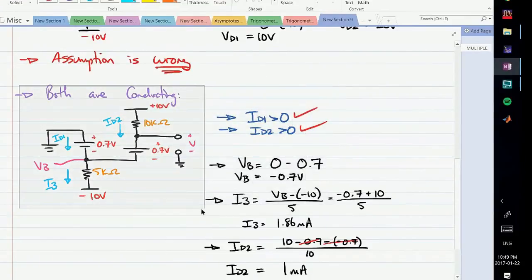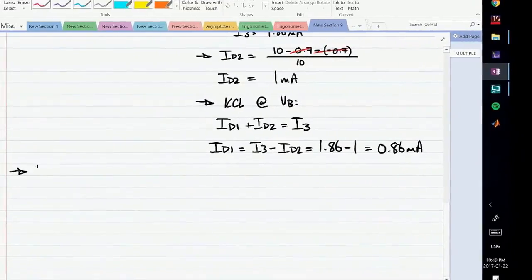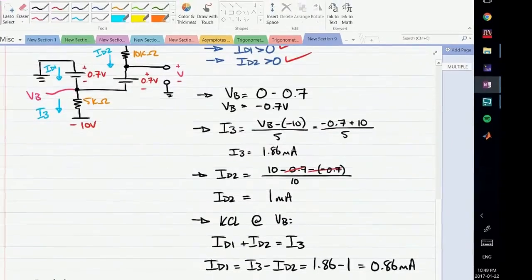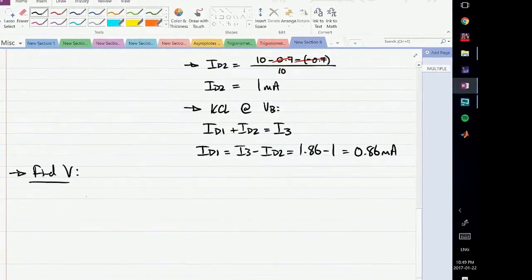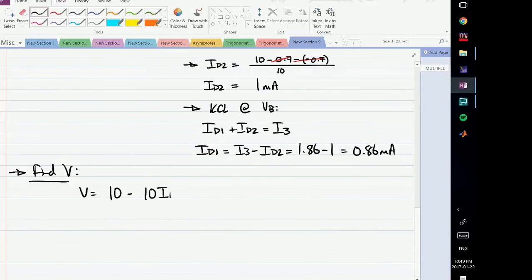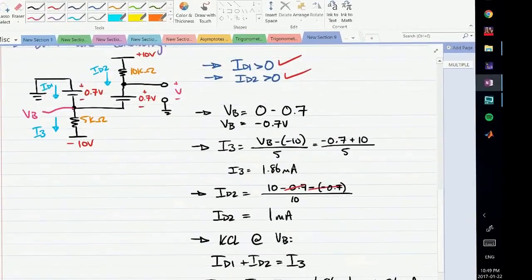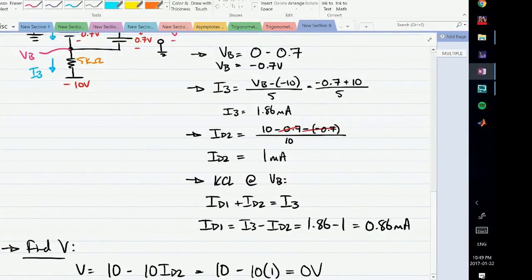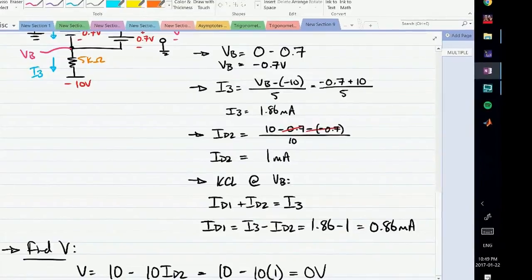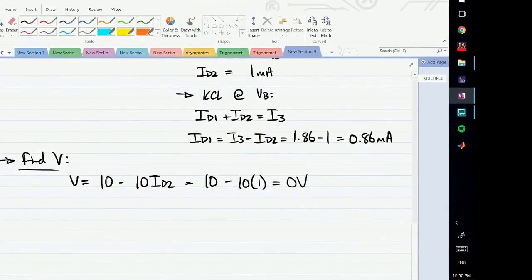Now, since we found the conduction state, we need to find V. How do we find V? V is simply 10 minus the voltage drop across this 10 kilo ohm resistor. So V equals 10 minus 10 times ID2. This is 10 minus 10 times 1, so we get 0 volts. You should notice this is a sort of fluke - this is not always going to happen. It's not always going to equal 0. Whenever you have a solution that equals 0, it's usually a little questionable, but what we have in this case is 0, and that's totally fine. You should just note this doesn't always happen.